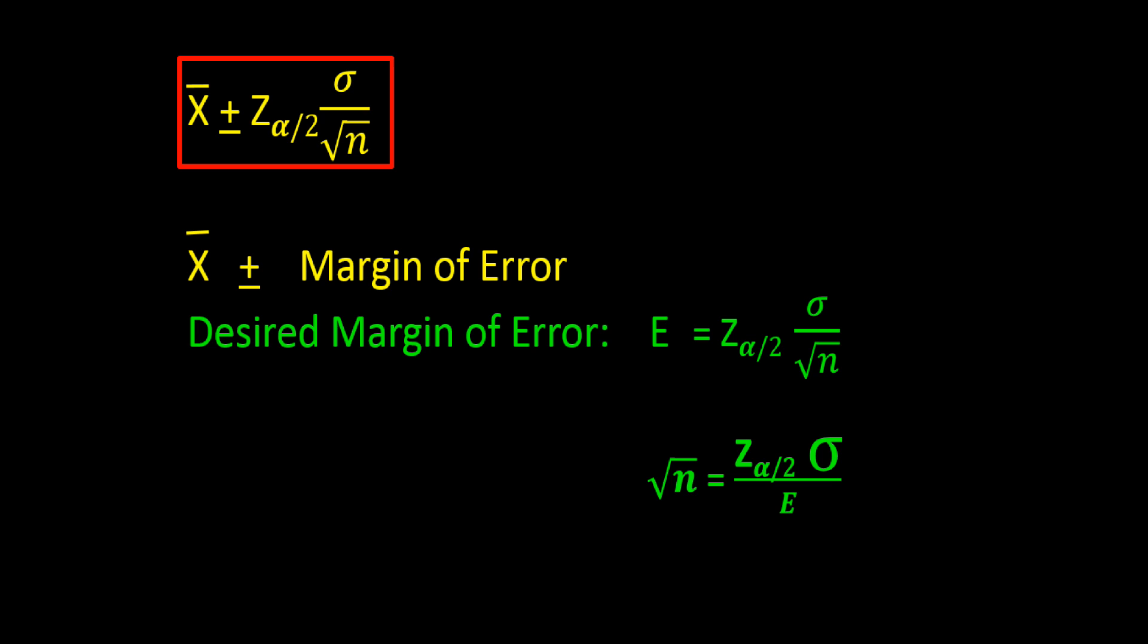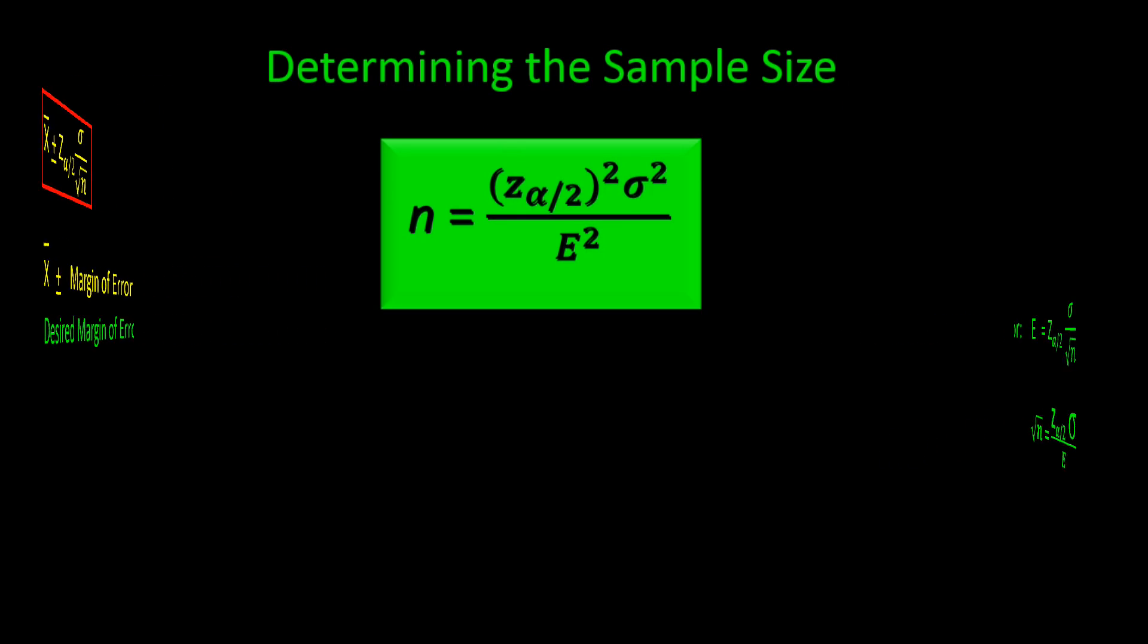Now what remains is to square both sides of the equation and we get the final formula for determining the sample size. Here it is in the green box: little n is equal to z squared times sigma squared divided by E squared.